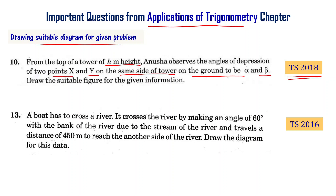A boat has to cross a river. It crosses the river by making an angle of 60 degrees with the bank of the river due to the stream of the river, and travels a distance of 450 meters to reach the other side of the river. Draw the diagram for this data — this is the Telangana Public Exam 2016 question.